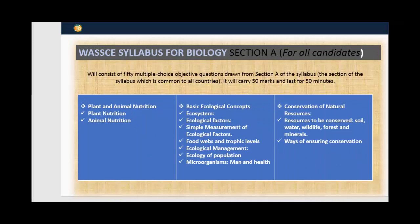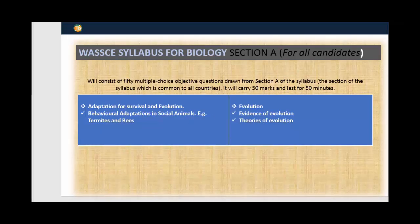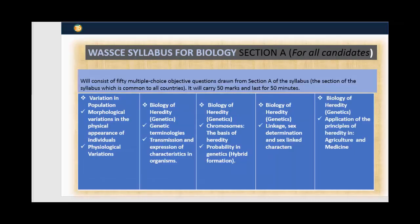Also in Section A, you have plant and animal nutrition, basic ecological concepts, conservation of natural resources, adaptation for survival and evolution, and variation and heredity — that's genetics. Remember, all these topics are for candidates in all countries.